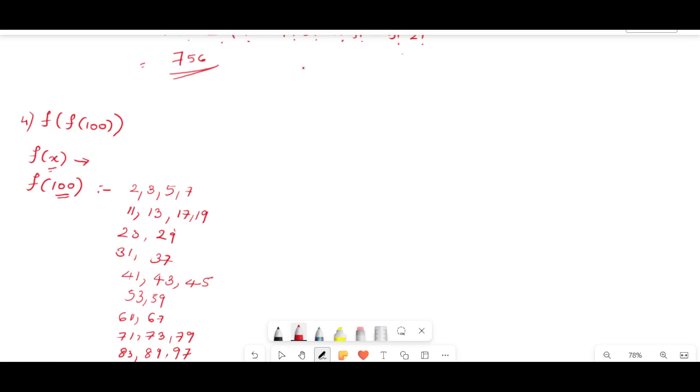These are the prime numbers from 1 to 100, less than 100. So f(x) is the number of prime numbers less than x. So f(100) is the number of prime numbers less than 100. So these are the prime numbers less than 100. We can see that there are 25 such numbers. Therefore f(100) is 25.